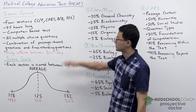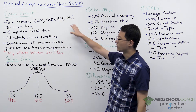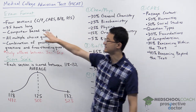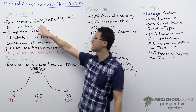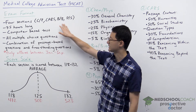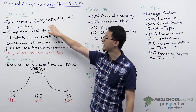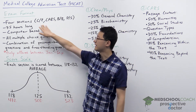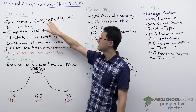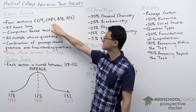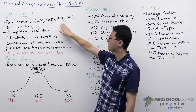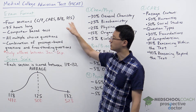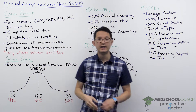To start, let's go over the format of the exam. The MCAT has four sections — the Chem-Phys section, the CARS section, the Bio-Biochem section, and the Psych-Soc section.